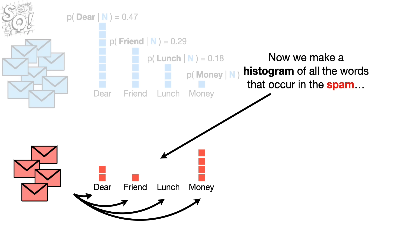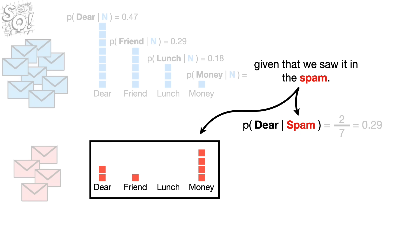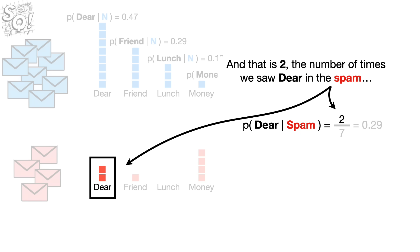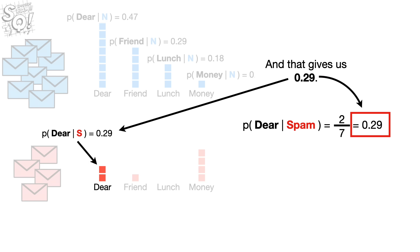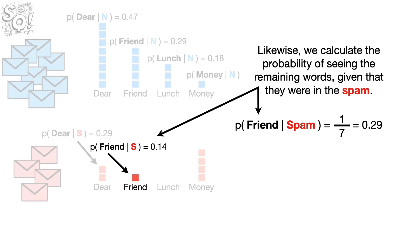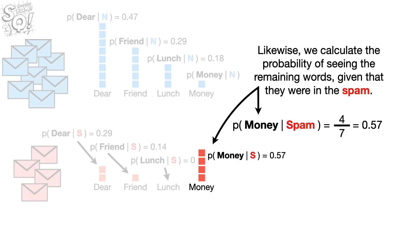Now we make a histogram of all the words that occur in the spam, and calculate the probability of seeing the word 'dear,' given that we saw it in the spam. And that is 2 — the number of times we saw 'dear' in the spam — divided by 7, the total number of words in the spam. And that gives us 0.29. Likewise, we calculate the probability of seeing the remaining words, given that they were in the spam.